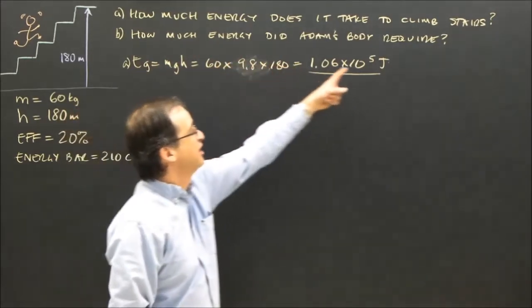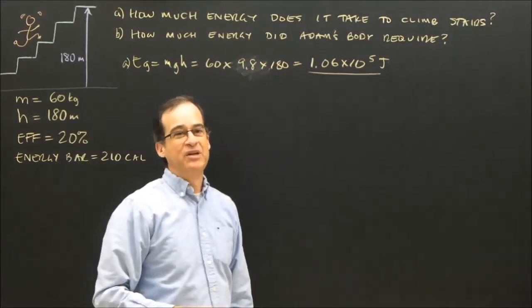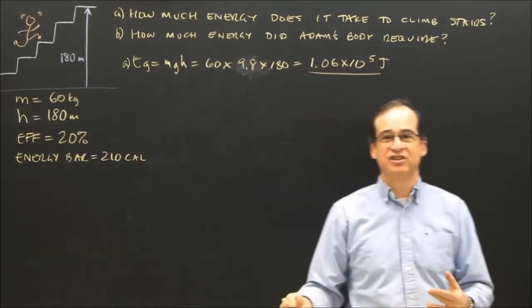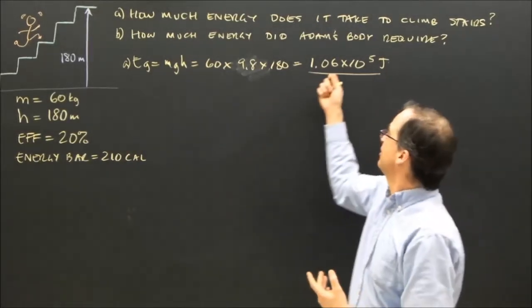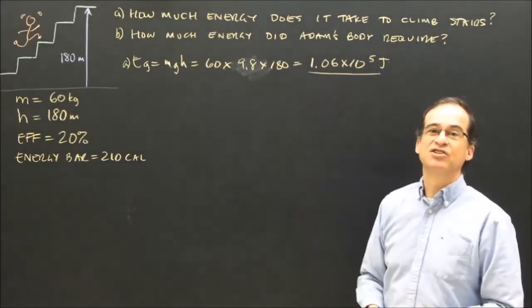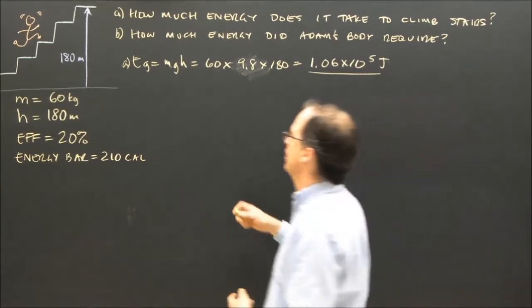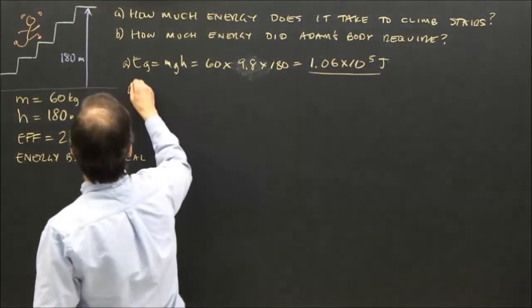Now the question is how much energy did Adam's body require? Well, it was 20% efficient. So it's going to take more energy to get that out. This represents 20% of what? So I use the formula, the efficiency formula.